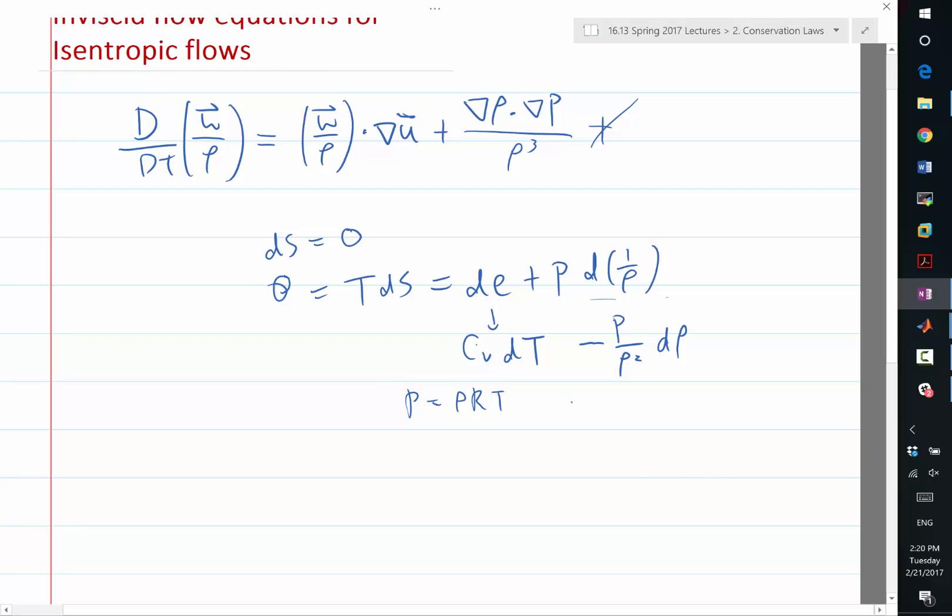So what it gives you is that I would take it in a logarithmic form. Log of p equals log of rho plus log of R, which is a constant, plus log of T. Differentiating that gives me dp over p equals d rho over rho plus dT over T.